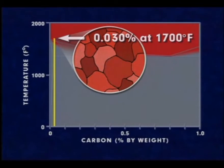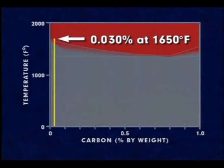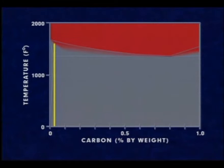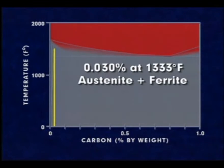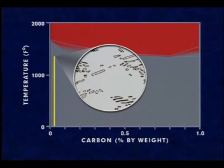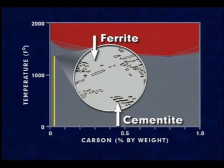If it is then cooled slowly, at about 1,600 degrees Fahrenheit the austenite begins to transform into ferrite. As cooling continues, more and more ferrite is formed, until at 1,333 degrees Fahrenheit the remaining austenite transforms completely. Ferrite can retain only 0.025% carbon at this temperature. So to accommodate the carbon in excess of this amount, the remaining austenite transforms to a mixture of ferrite and cementite in alternating thin, plate-like layers.